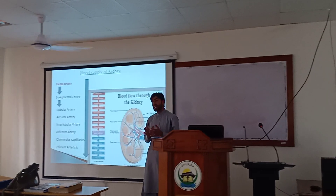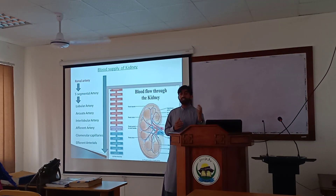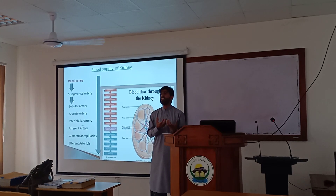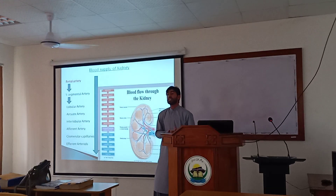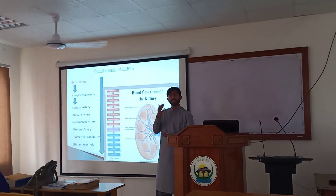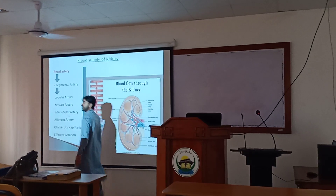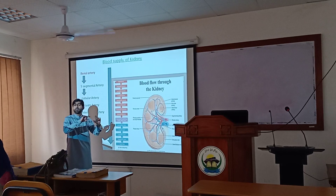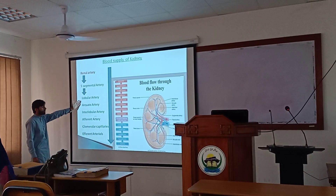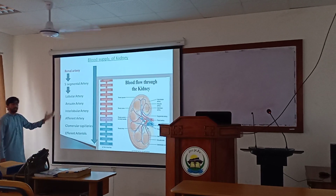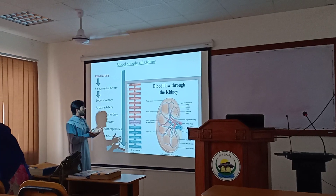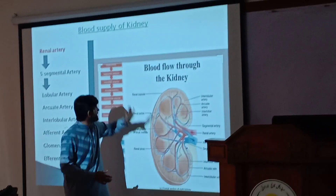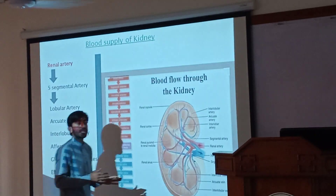Now, blood supply of the kidney. The kidney receives a very large amount of blood — it has a rich blood supply. The renal artery enters at the hilum, right across the middle of the kidney. The renal artery divides into five segmental arteries. These five segmental arteries then become the interlobar artery, then the arcuate artery. The arcuate artery branches into the interlobular artery, then the afferent arteriole, and finally the efferent arteriole. This branching pattern is shown in the diagram of the kidney.